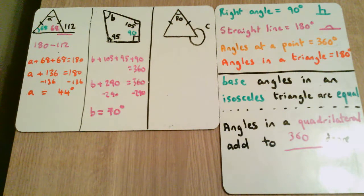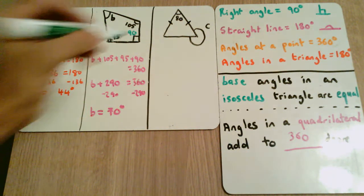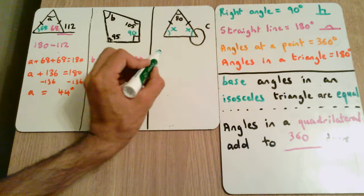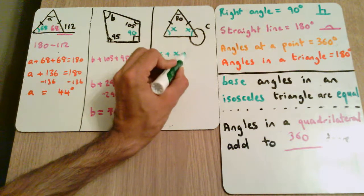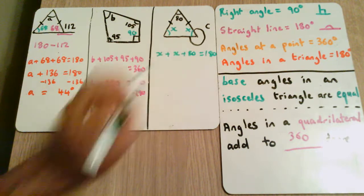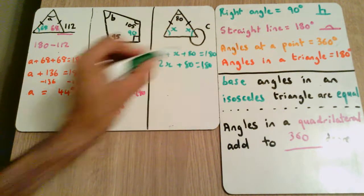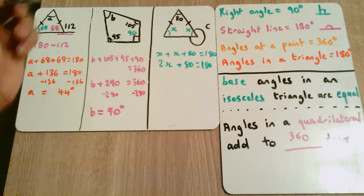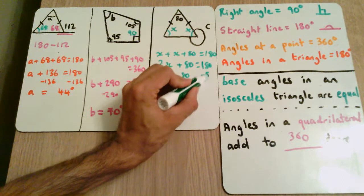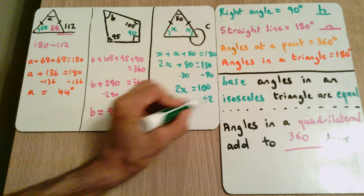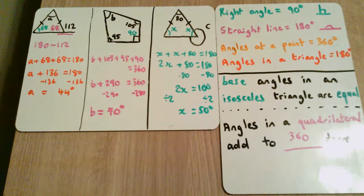The last example is an isosceles triangle, and we also have angles occurring at a point, so we're going to combine these two rules. We know that the two base angles are the same — I'll call them x. So x plus x plus 80 equals 180. Taking away 80 from 180 leaves 100 degrees, so 2x equals 100. Dividing both sides by 2 gives x equal to 50 degrees.